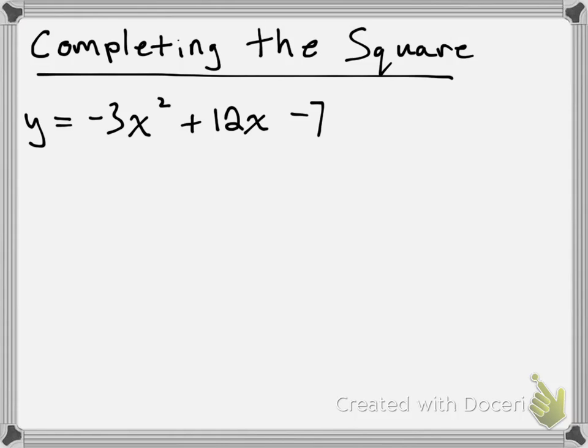First thing that we're going to want to do—notice that the x² term has a coefficient of -3, and I'm going to want to pull out that coefficient, the -3, but I'm going to do it from the first two terms, so the -3x² and the +12x.